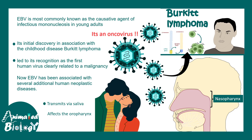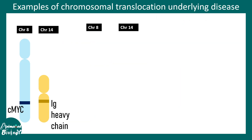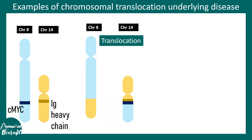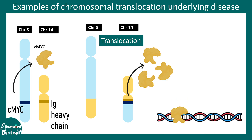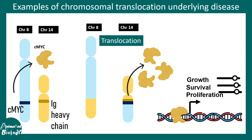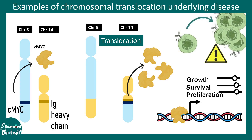In Burkitt's lymphoma, the CMYC gene present on chromosome 8 gets translocated into chromosome 14. This faulty translocation, induced by the virus, leads to overproduction of CMYC proteins. CMYC is a cell cycle regulator that drives growth, survival, and proliferation, causing B cells to overproliferate and produce this cancer.